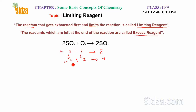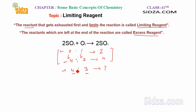However, if we react SO2 and O2 in a different ratio — say 4 moles of SO2 with 3 moles of O2 instead of 2 — the amount of product formed depends on the limiting reagent. We need to check which is the limiting reagent. We require only 2 moles of oxygen, but we are taking 3 moles, so oxygen is in excess. Sulfur dioxide will be the limiting reagent because it will be consumed first.